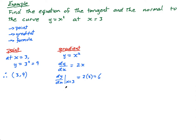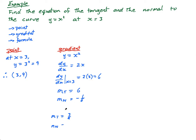Be careful — that is the gradient of the tangent. So the gradient of the tangent, mT, equals 6. If the gradient of the tangent equals 6, then the gradient of the normal, mN, equals negative 1 over 6. The perpendicular line — you flip it and change the sign. For example, if mT was 3 quarters, then mN would be negative 4 over 3. So now I have the gradient for the tangent and the gradient for the normal.